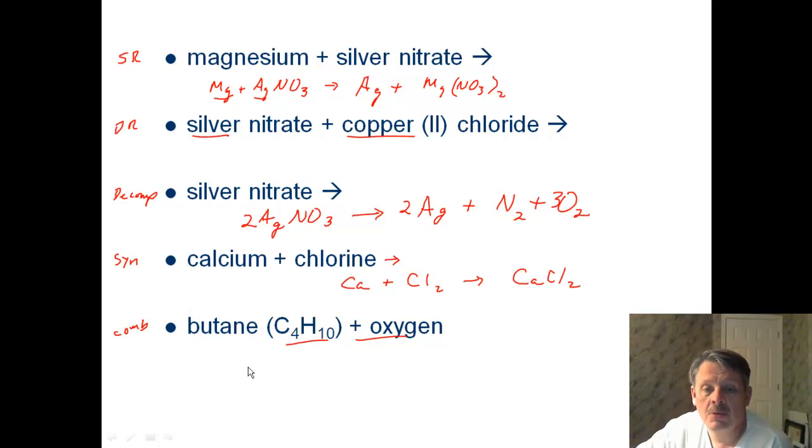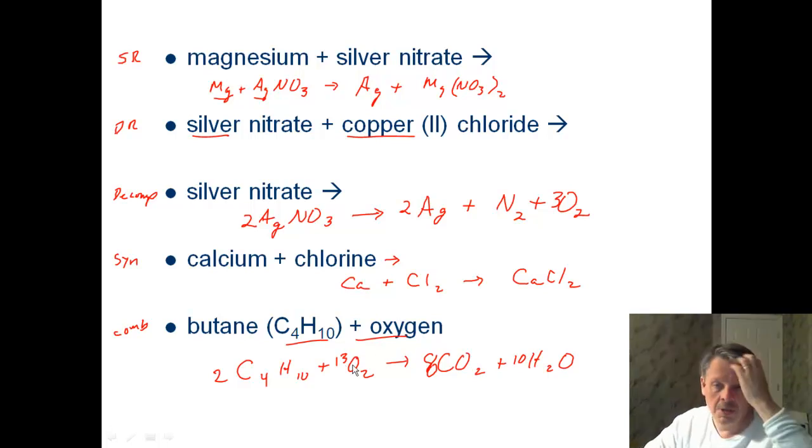And then finally, you have butane reacting with oxygen. Whenever you have a combustion reaction, you're always adding oxygen to a carbon hydrogen or carbon hydrogen oxygen compound, and you're always producing carbon dioxide and water. And so this is going to take eight of these, and it's going to take ten of these, and it's going to take 13 oxygens, I believe. So you should be able to predict your product and balance your reaction.